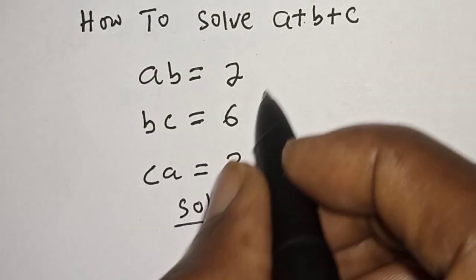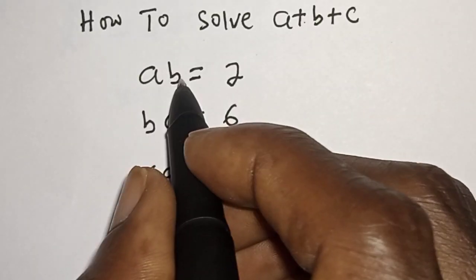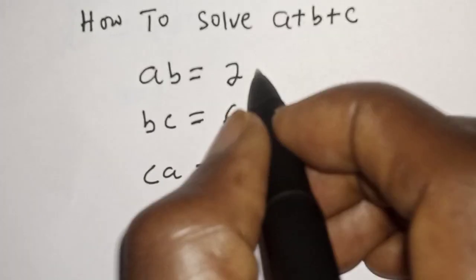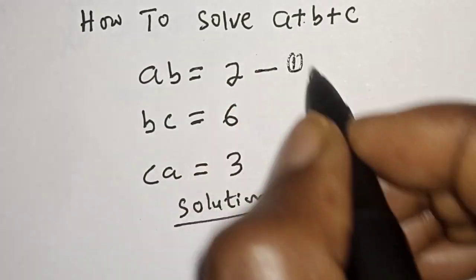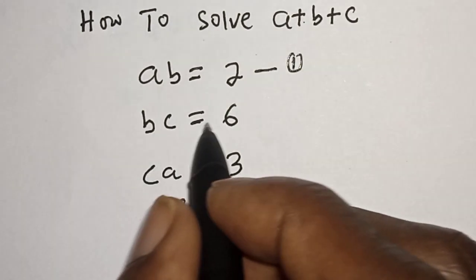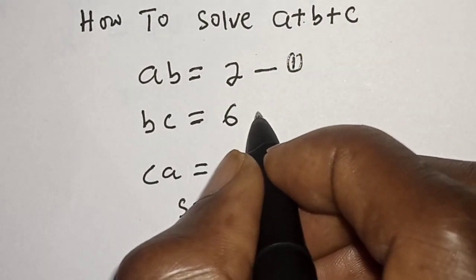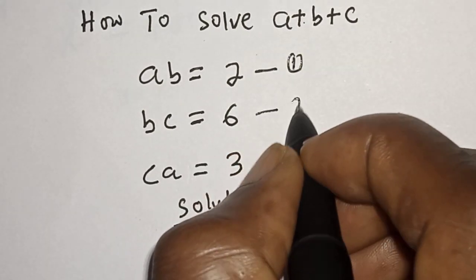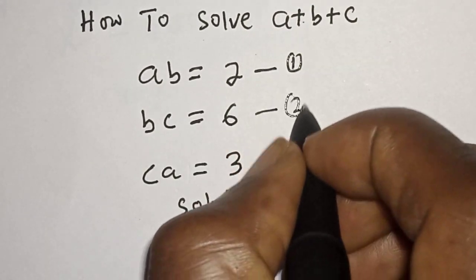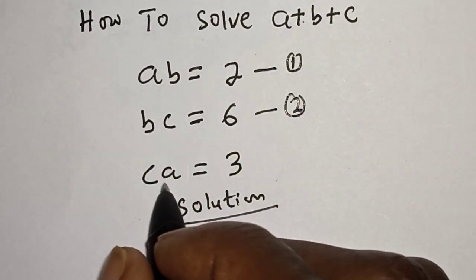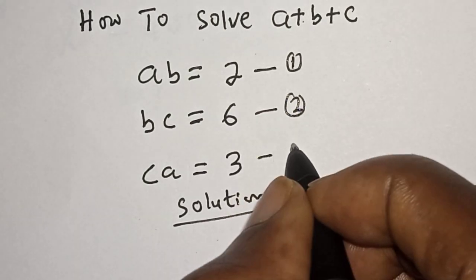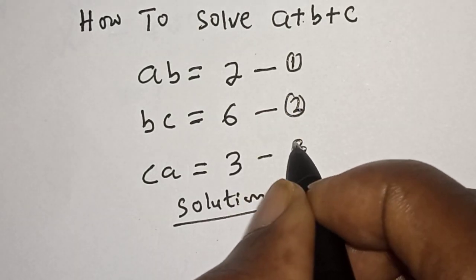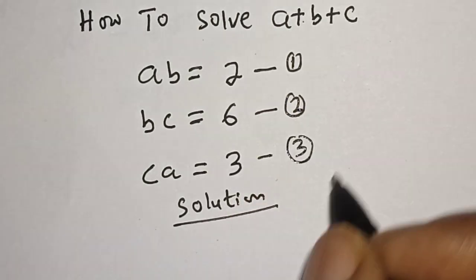Solution. AB is equal to 2 — let's call this equation 1. Then BC is equal to 6 — let's call this equation 2. And CA is equal to 3 — let's call this equation 3.